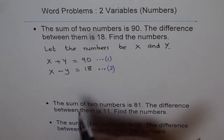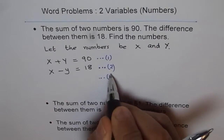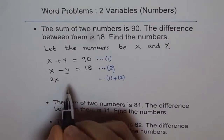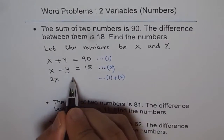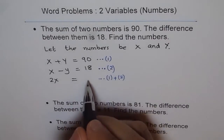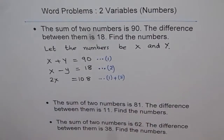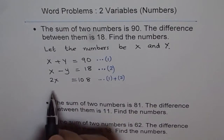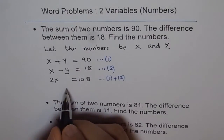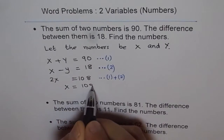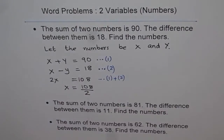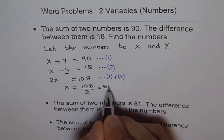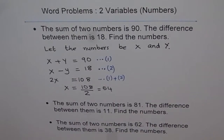We will add equation 1 and equation 2. When you add X and X you get 2X. When you add Y and minus Y you get 0, so forget about it. Adding 90 and 18 gives 108. So 2X equals 108. Dividing both sides by 2, X equals 108 divided by 2, which gives you 54.